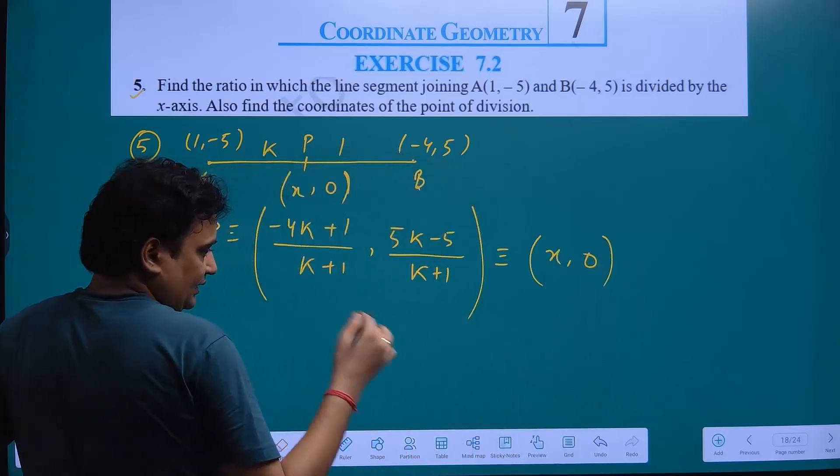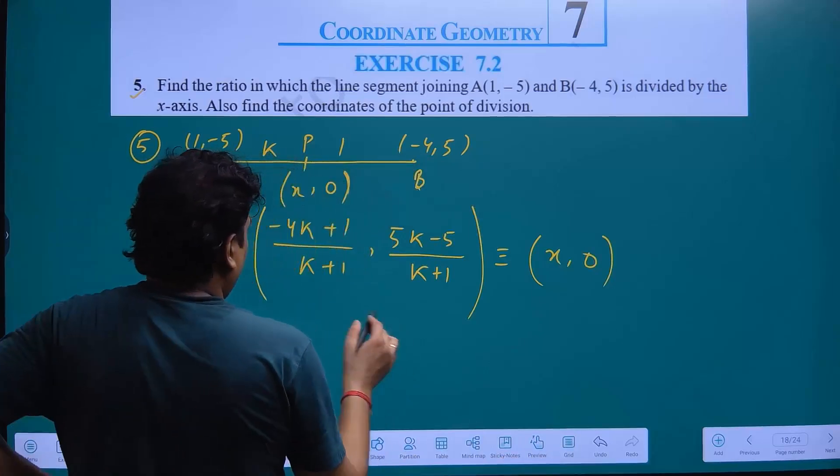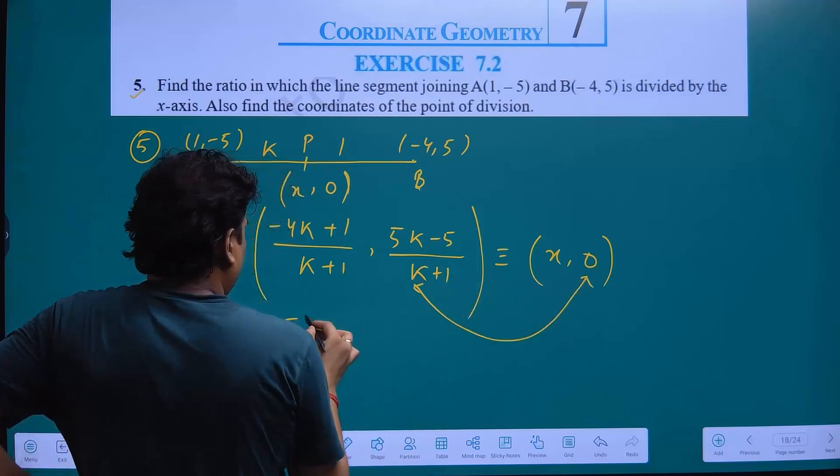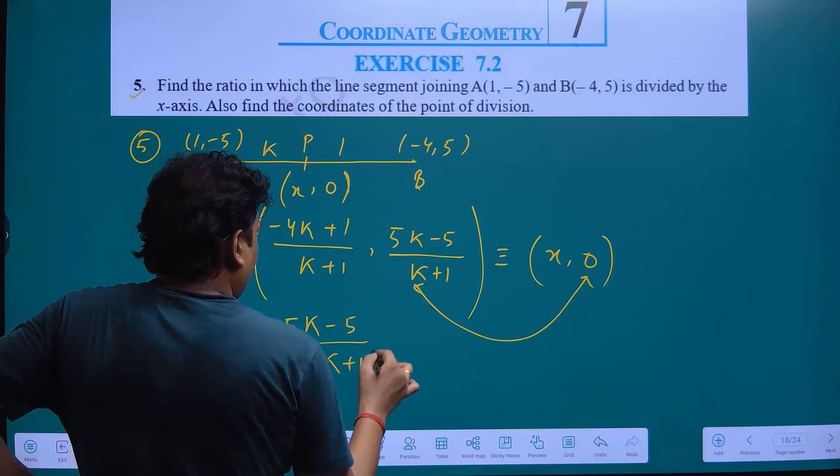Y coordinate is 0 when x-axis is divided. So compare this: 5K minus 5 upon K plus 1 equal to 0.